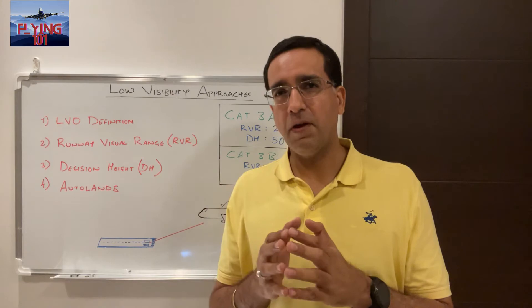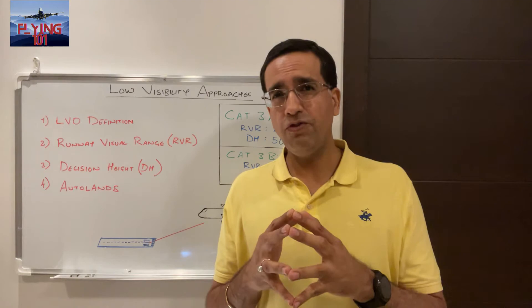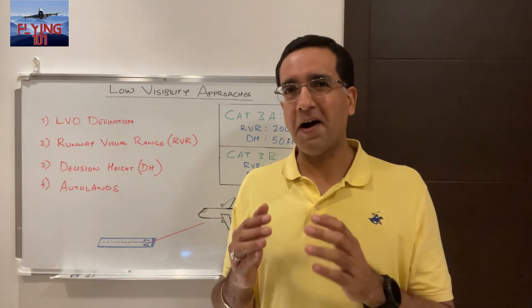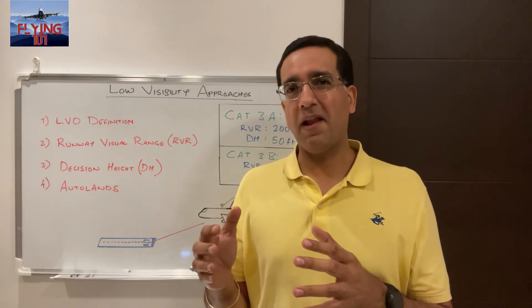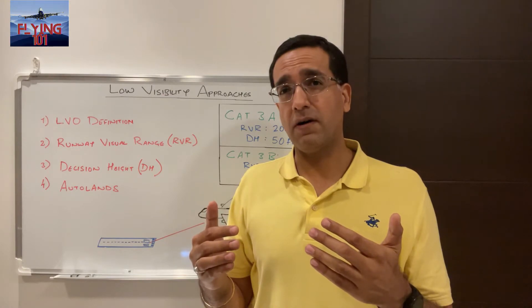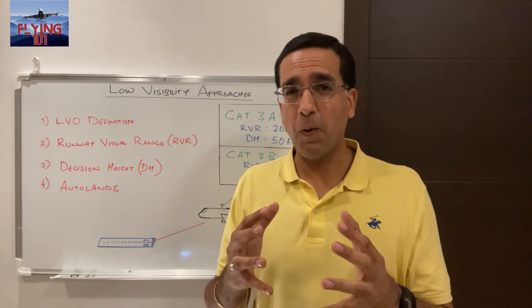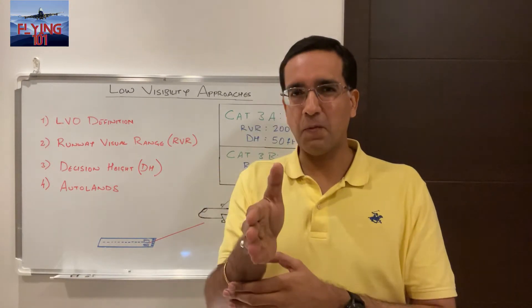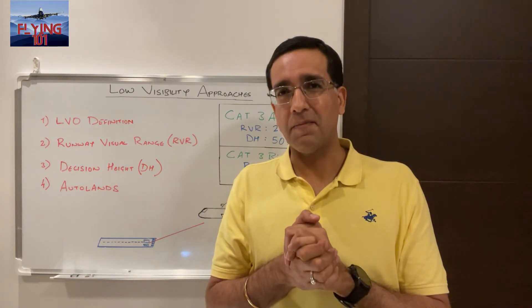In order to accomplish an auto land — and we will do a separate video on how an approach in low visibility is flown — as a brief outline, a precision approach system such as an ILS (instrument landing system) would be used to provide guidance to the aircraft on the approach path and during the landing and the rollout. Rollout is the phase of the landing after an aircraft has touched down and is decelerating down to taxi speed. We need a system such as ILS to facilitate auto lands because it provides guidance to the aircraft in both the horizontal and the vertical plane, hence the term precision.